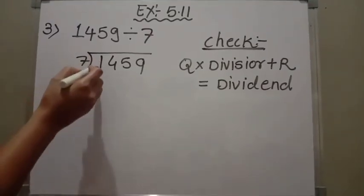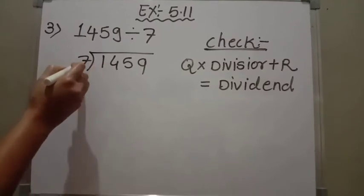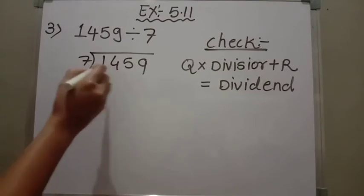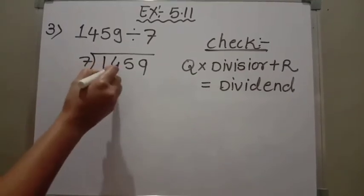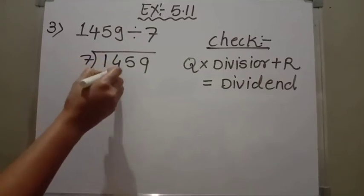Now the first digit of the number 1459 is 1, but 1 is smaller than 7. So here I am going to divide the first 2 digits by 7. The first 2 digits are 1 and 4, which is 14. So I am going to divide 14 by 7.